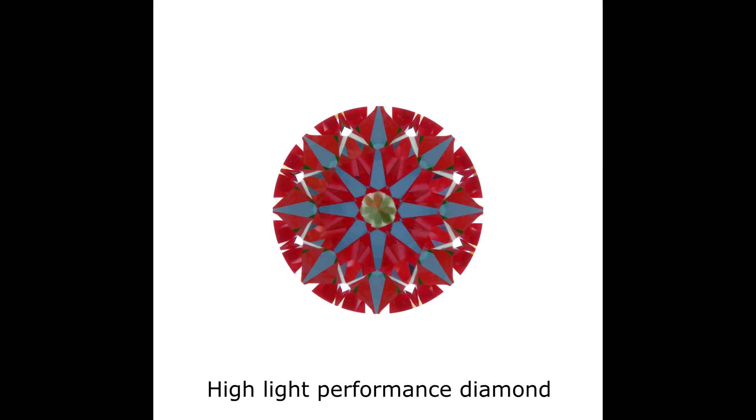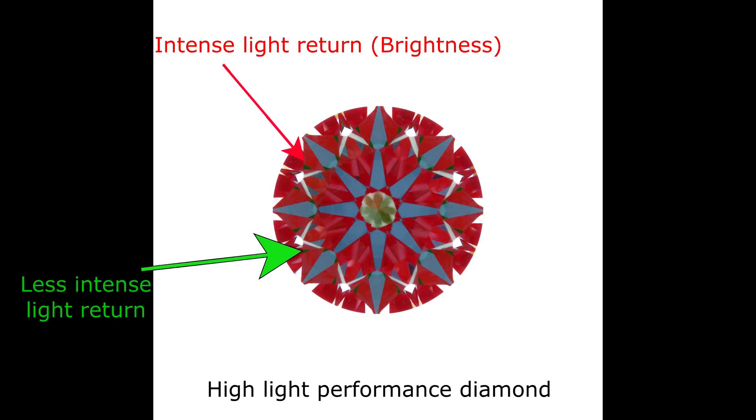Under the scope, this is how a super ideal cut or high light performing diamond will look like. The red areas represent intense light return which is where the brightness of the diamond will come from. Green areas are weaker light return, blue is contrast, and white is full light leakages.